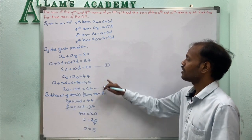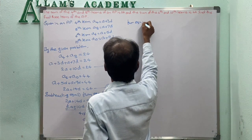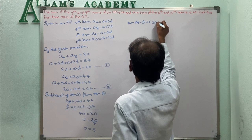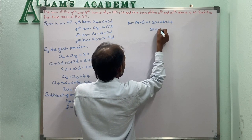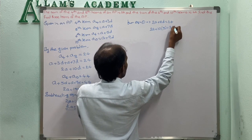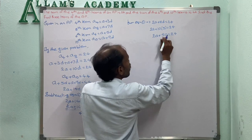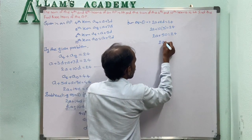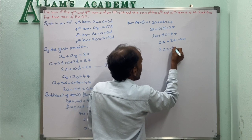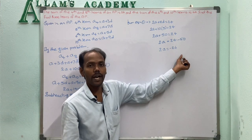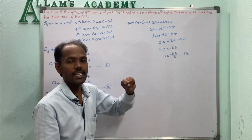Substituting D = 5 into equation 1: 2A + 10 × 5 = 24, so 2A + 50 = 24. Transferring 50: 2A = 24 - 50 = -26. Therefore A = -26 divided by 2 equals -13. The first term is -13.